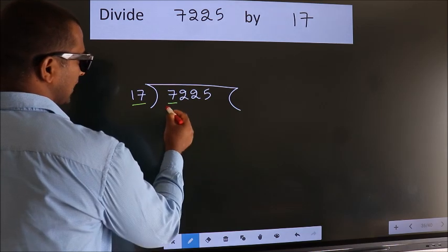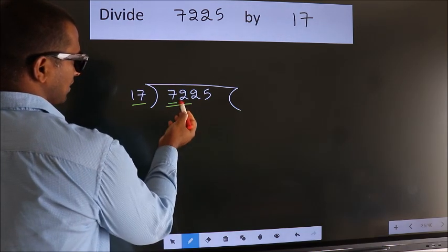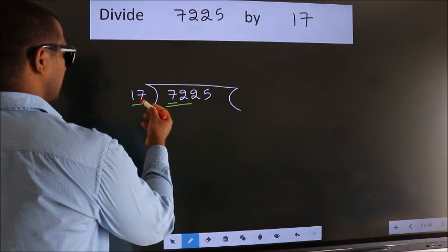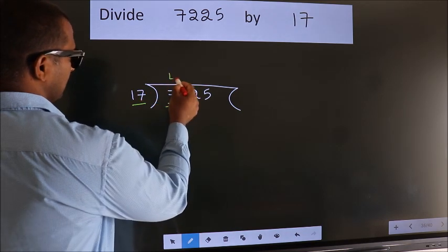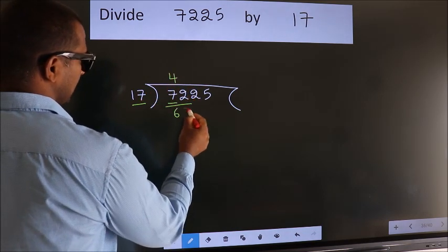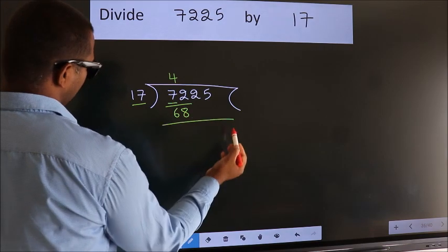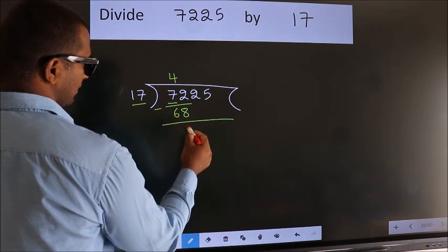So we should take 2 numbers: 72. A number close to 72 in the 17 table is 17 times 4, which is 68. Now we subtract. We get 4.